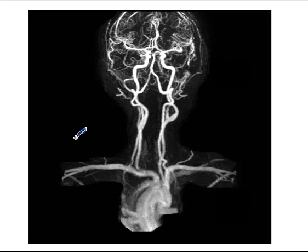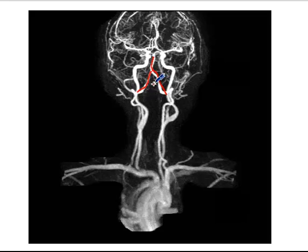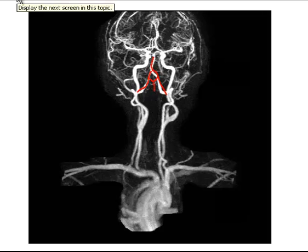This is an angiogram — actually an MRA — of the vertebral artery. What you see here is one vertebral artery and the other vertebral artery. These two vertebral arteries join together to form the basilar artery. The anterior spinal artery comes out somewhere here; there are two stems from the vertebral artery that join together to form the anterior spinal artery, which is involved with the medial medullary syndrome.